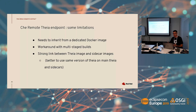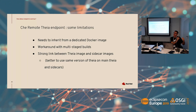This is nice, but we have some limitations. We need to inherit from a dedicated Docker image. Sometimes you want to use some existing images, like the default Java image, but you can't because you cannot inherit from two images. You can do some workarounds with multi-stage builds, where you inherit from a Java image and copy all the Theia home folder from another image, but it's a workaround. You have a very strong link between your Docker image and the Theia version used inside of Che.